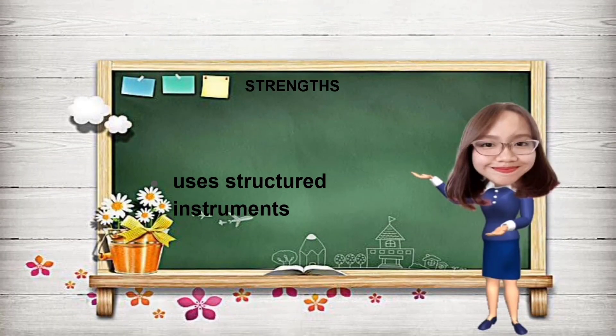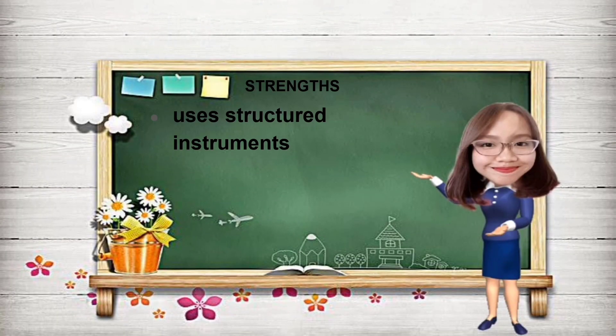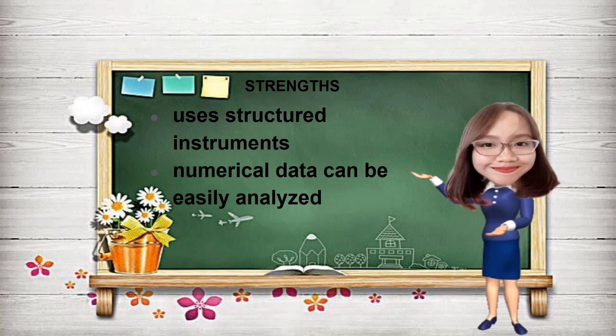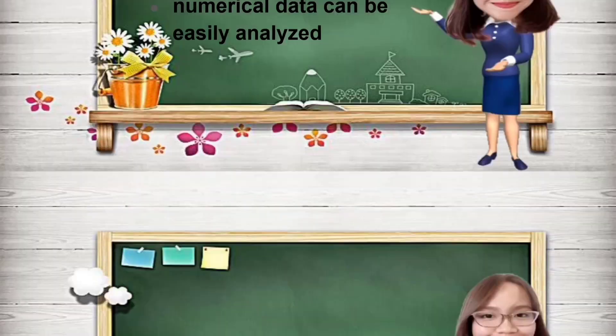Number three, quantitative research uses more structured research instruments. As discussed in the previous session, quantitative research uses standardized instruments that ensure the accuracy, reliability, and validity of data. Number four, the numerical data can be analyzed in a quick and easy way. By employing statistically valid random models, findings can be generalized to the population about which information is necessary.